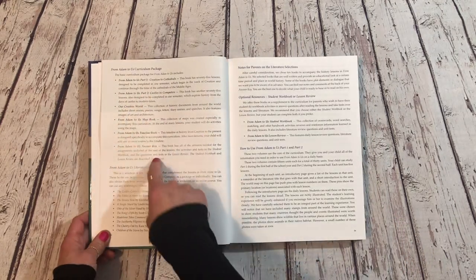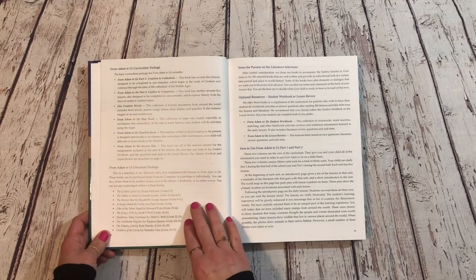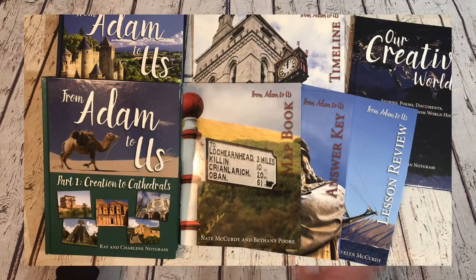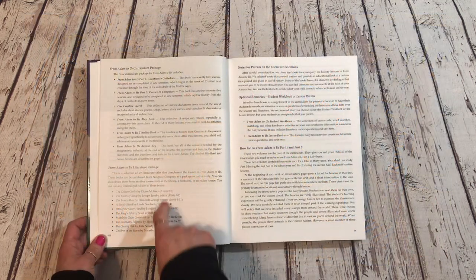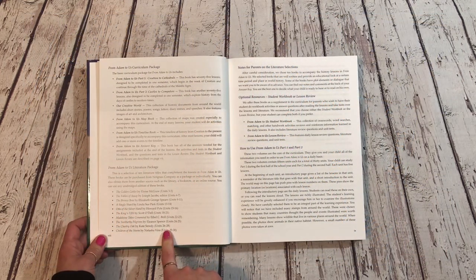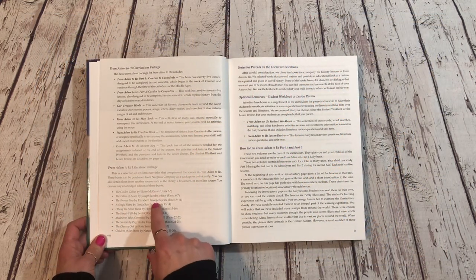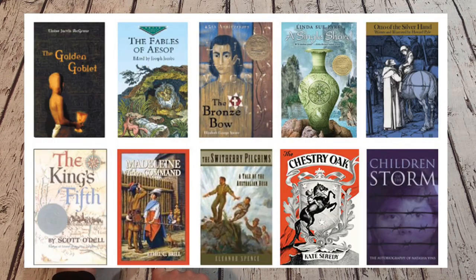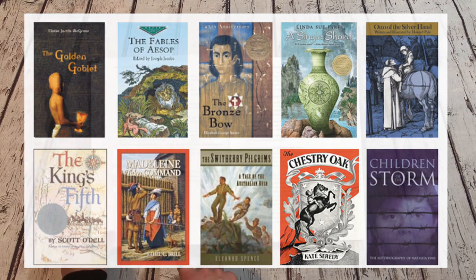This is a breakdown of the basic curriculum package and what it comes with — basically what I've already shown you. The literature package comes with ten different literature books, and it breaks down which units you will be using each book in. Up at the top is a note for parents on the literature selections.